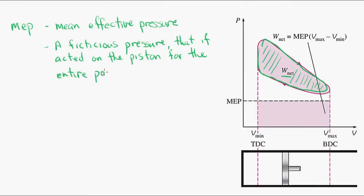So the MEP is a fictitious pressure that if it was acted on the piston for the entire power stroke, it would produce the same amount of net work as is actually produced in the cycle.